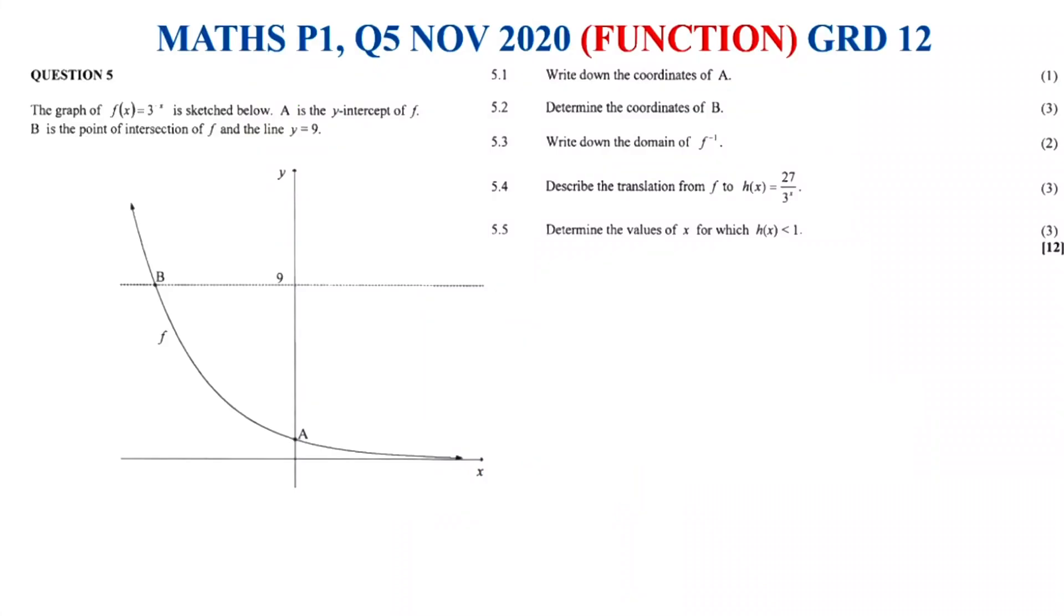What's up everybody, welcome to yet another one. Question 5, November 2020. It was a function question, an exponent given by f(x) equals 3 to the power of negative x, and it's sketched below. A is the y-intercept.